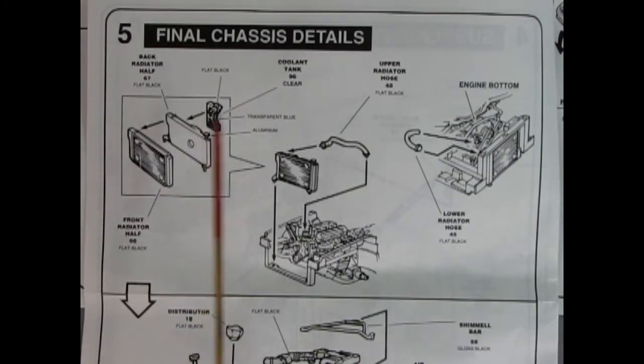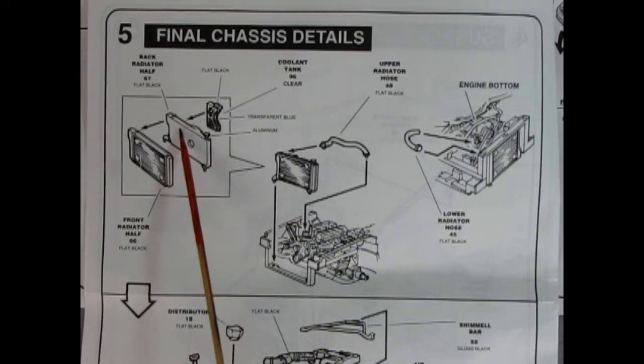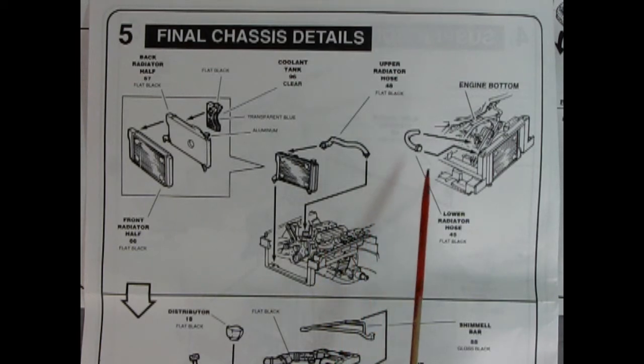Panel five shows our final chassis details. So here we've got the radiator front and back gluing together as well as the coolant tank which glues over here. Then that drops into our chassis and we hook up the upper radiator hose on the top of our engine and the lower radiator hose on the bottom.